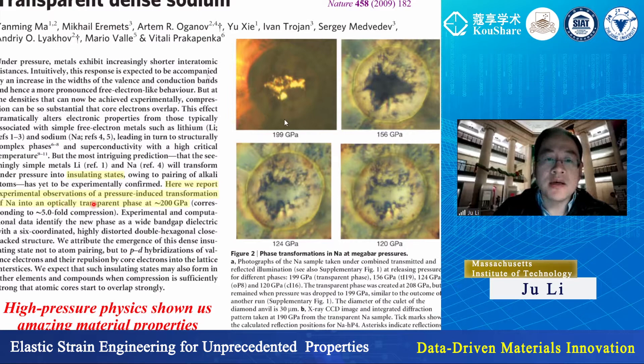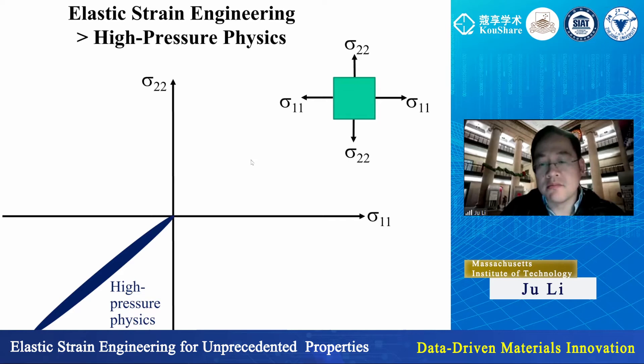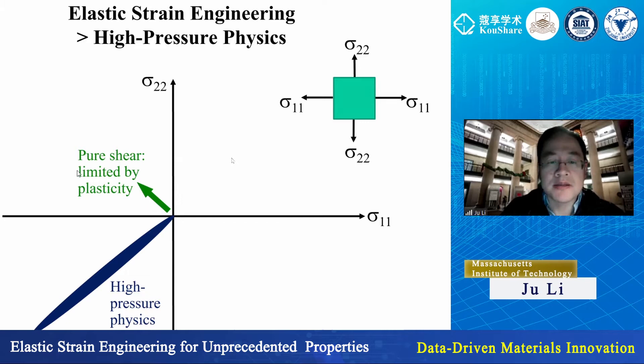What I'd like to talk about today is a superset of high-pressure physics, which only applies equal triaxial compressive stresses — all three principal stresses have to be negative and equal. If you compress in X and pull in Y, that is shear stress, but you wouldn't be able to go very far in standard materials because you approach the yield strength and trigger dislocation plasticity. Or if you apply uniaxial tension, you could also trigger fracture.